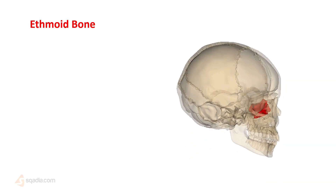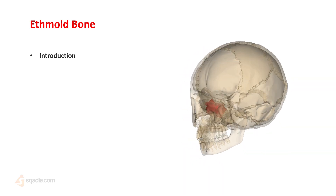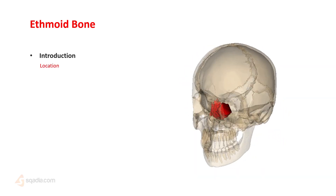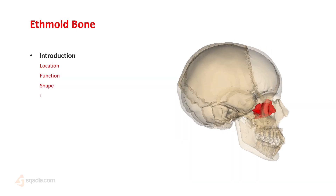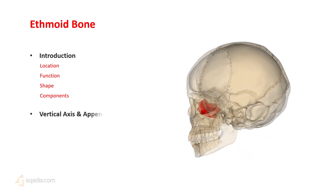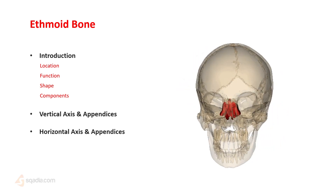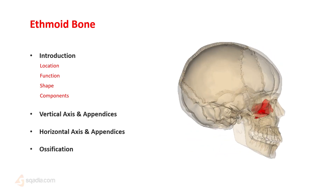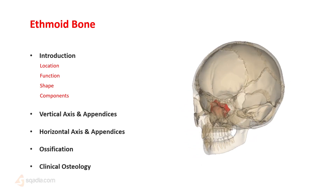So what is the ethmoid bone? We'll cover it by first introducing the bone, then talking about where it's located. After that, we'll talk about its functions, its shape and components, and then get into detail on all the different structural components. After that, we'll be talking about the ossification and some clinical points related to the ethmoid bone.